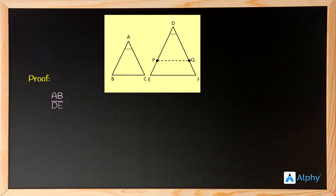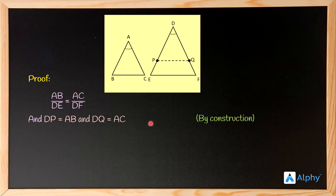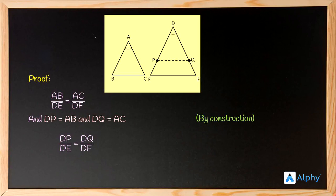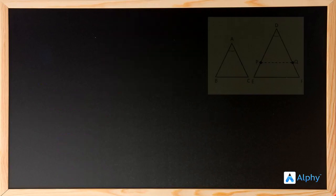We are already given that AB/DE equals AC/DF. By construction, DP equals AB and DQ equals AC. Replacing AB with DP and AC with DQ, we get DP/DE equals DQ/DF, which can be rewritten as DE/DP equals DF/DQ.